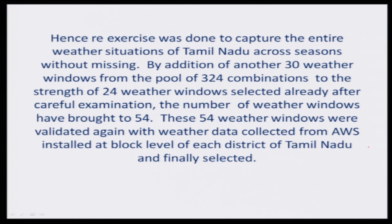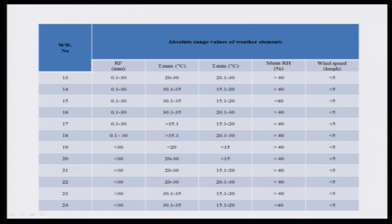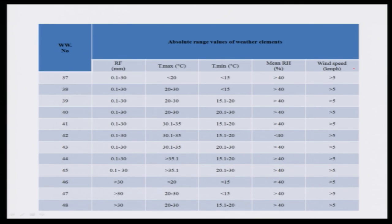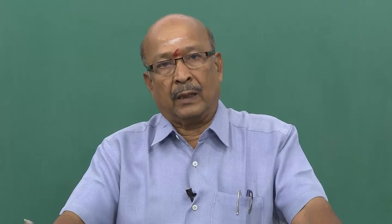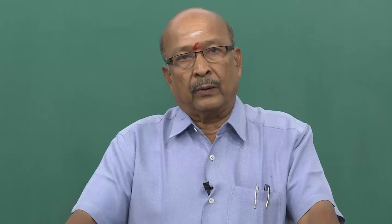I would like to show the 54 weather windows for your observation. Weather Window 1: rainfall 0, maximum temperature less than 20, minimum temperature less than 20, mean relative humidity greater than 40, wind speed less than 5. Like that, we have developed 54 weather windows that can accommodate all weather situations across seasons of Tamil Nadu. This weather window package will be fed into a computer or server specially meant to accommodate weather windows, completed as the first step. With this, I complete this class and we will continue the remaining content in the next class.